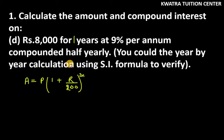Hello everyone, let's start with question number 1, part d. It says, calculate the amount and compound interest on Rs.8,000 for 1 year at 9% per annum, compounded half yearly.